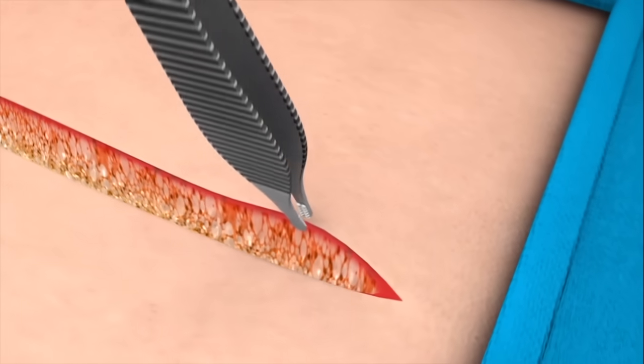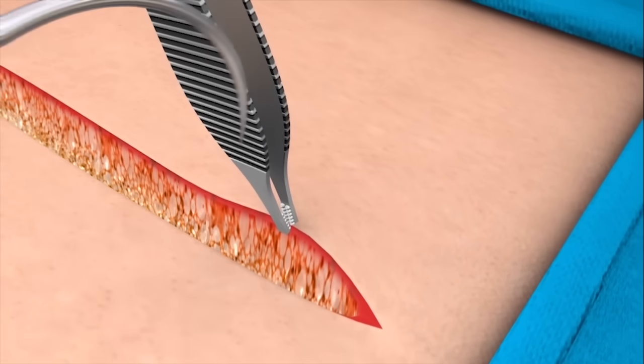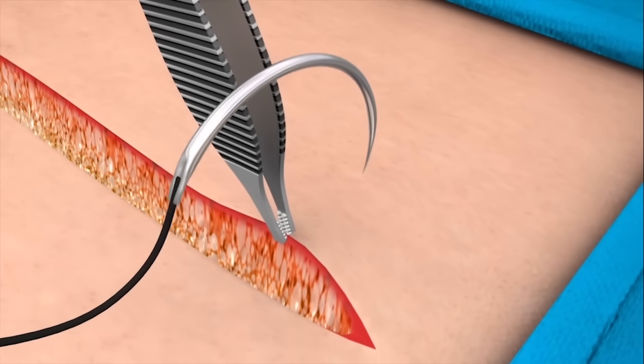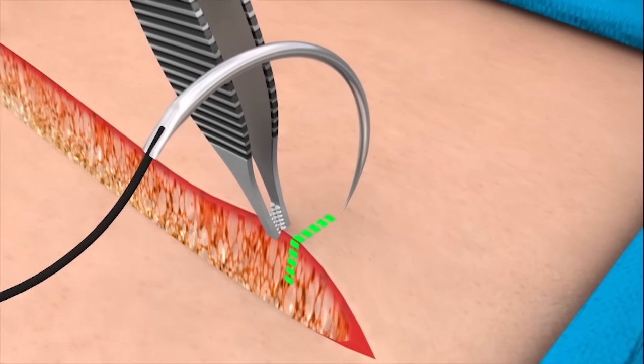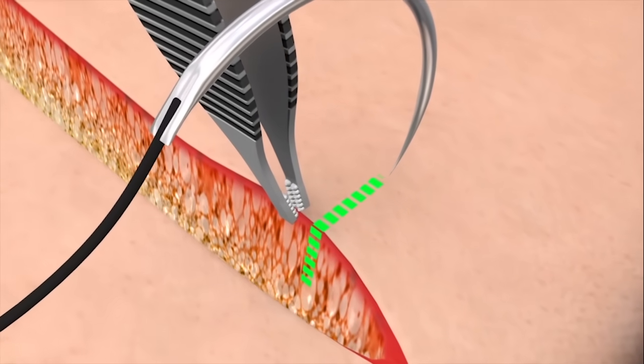Use the toothed forceps to very gently lift the skin edges and hold the skin when inserting the needle. Take a slightly larger bite than normal to start the vertical mattress suture.